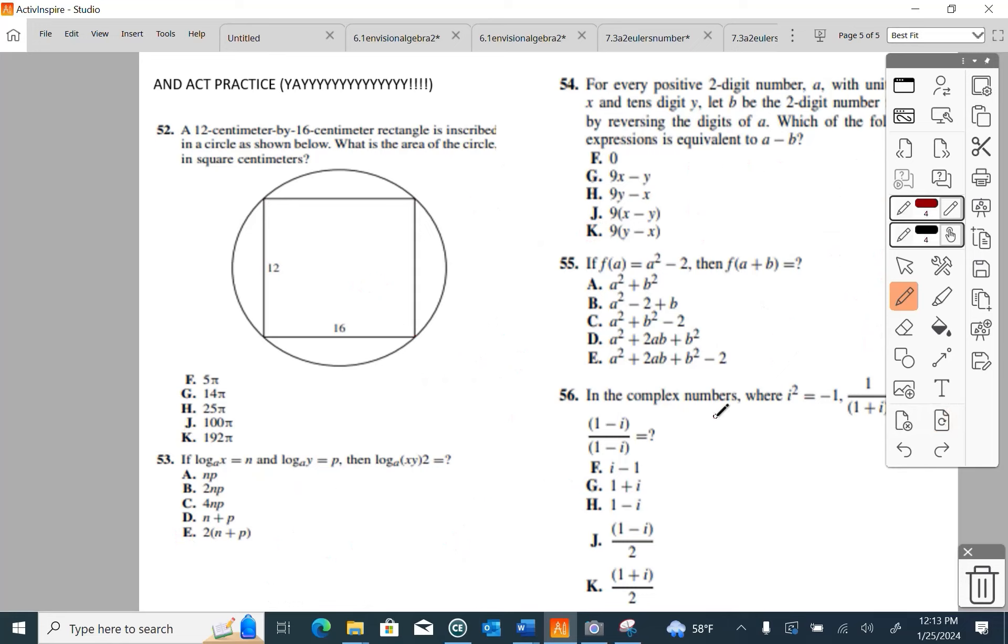55, if F of A equals A squared minus 2, then F of A plus B must be what? This should be no problem for any kid who's at Algebra 2. We're going to let every A become A plus B. Even the ACT checks for this. So, F of A plus B is going to be, there's an A and it becomes A plus B. You have to square it minus 2.